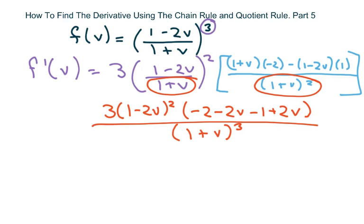And the last thing we need to do is clean this part up. The V's cancel, and then we have negative 2 minus 1 is negative 3.